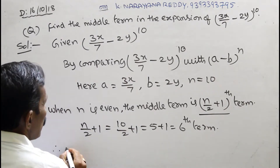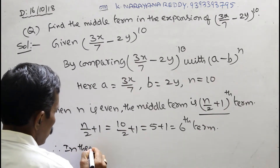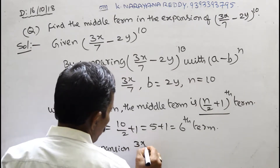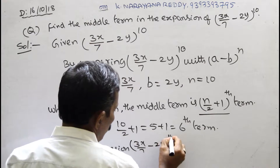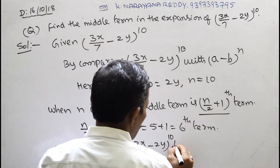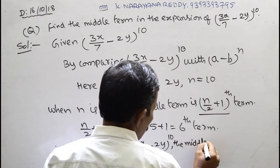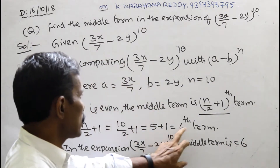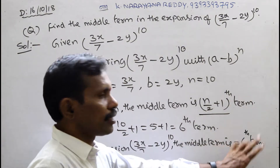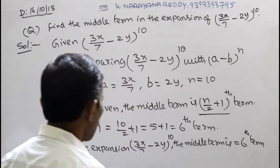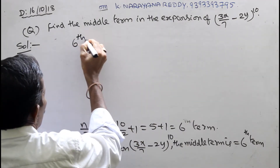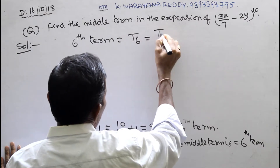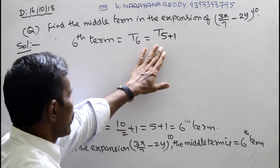Therefore, in the expansion of (3x/7 − 2y)^10, the middle term is the 6th term. So T6 = T(5+1).